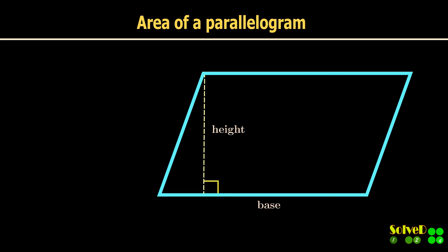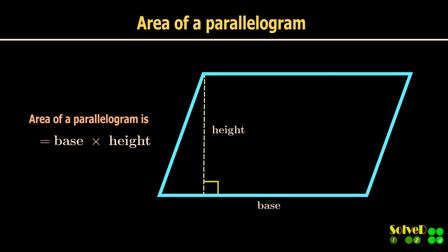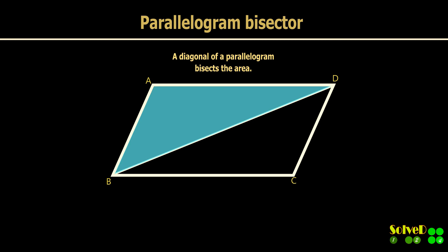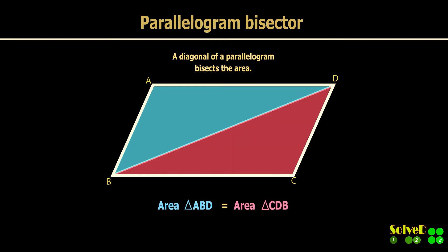The area of a parallelogram is the base times height as shown. The two triangles as shown have the same area.